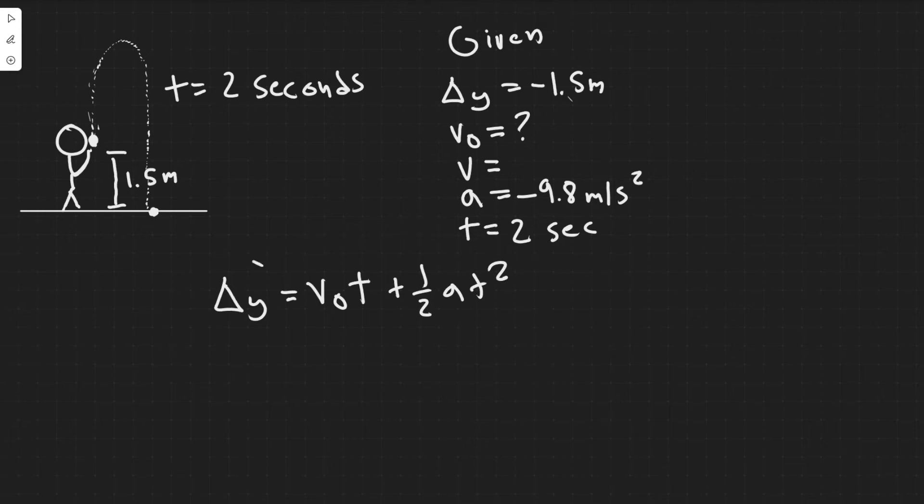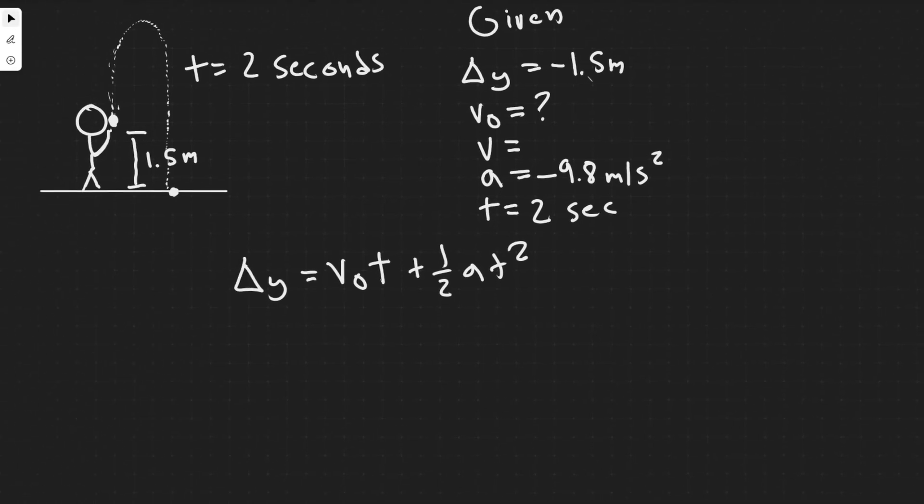The reason I'm choosing this one is I know delta y. I know we're solving for v sub 0, so it needs to be in it. We have the time and we have a. So we have every variable we just got to solve now. So now it's just a matter of plugging it in.